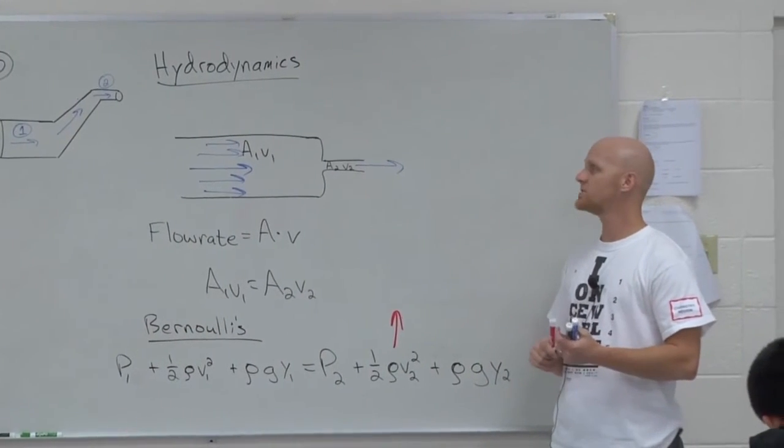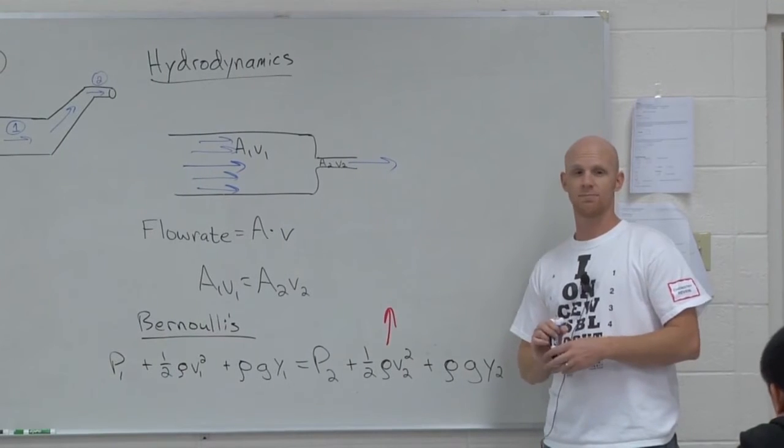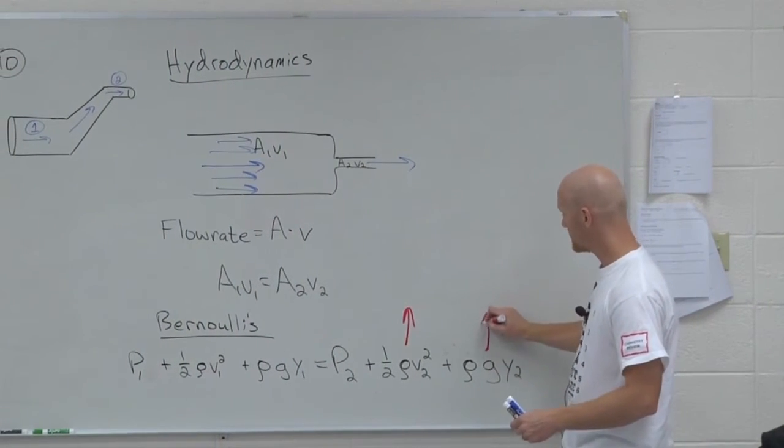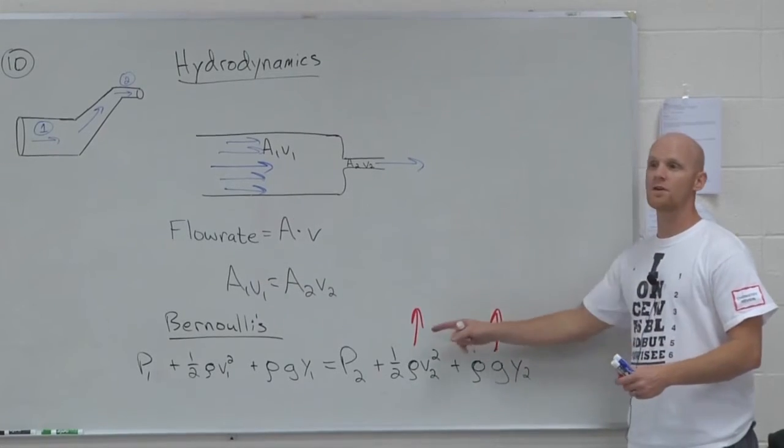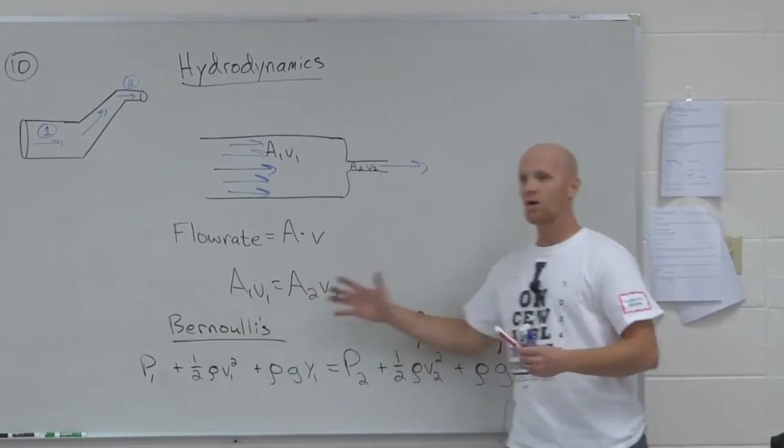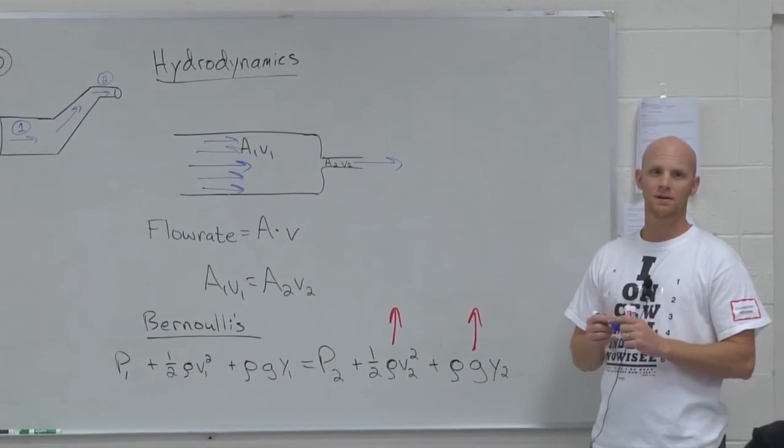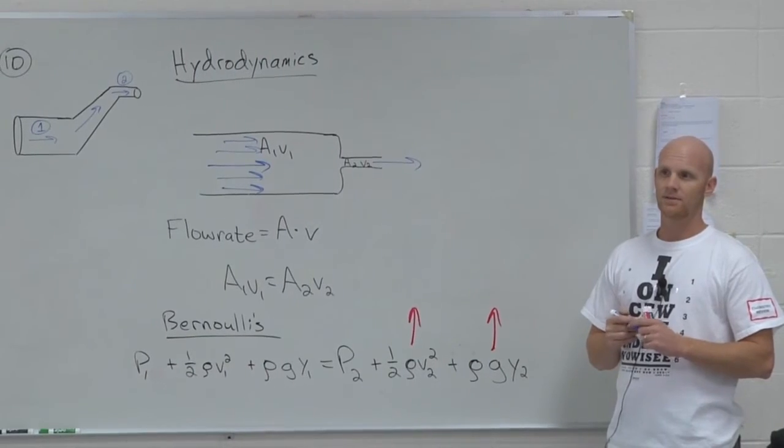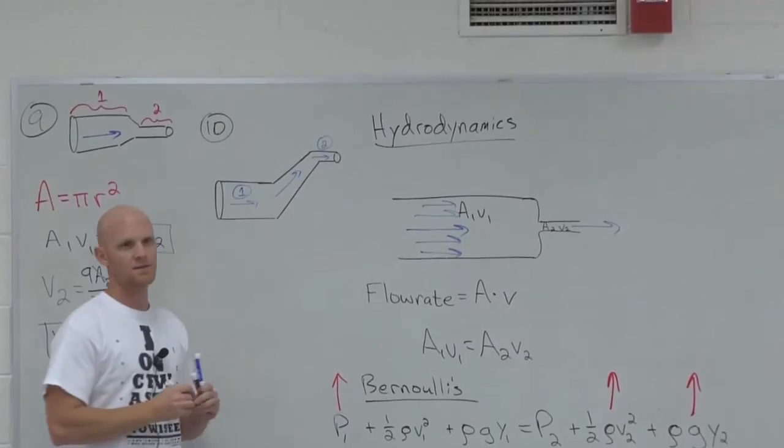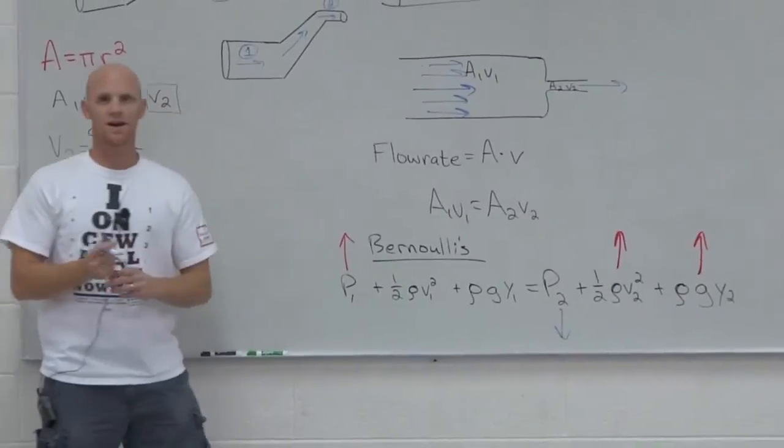Which term, which region, region one or region two, is going to have the higher potential energy term? Two as well. So here, the potential energy term is also larger on this side as well. If we're going to have this equality here, then what must be true? Then pressure's got to be higher on this side. Or we could say that pressure's got to be lower on this side, however you want to look at it. So the only way,